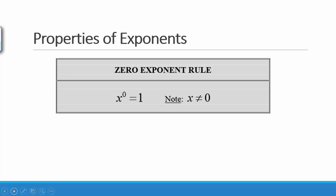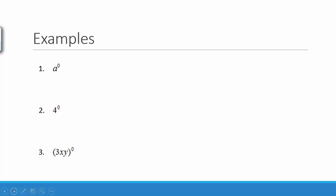Our next property is the zero property of exponents: if you raise any number or variable to the zero power, you get 1. Note, x cannot equal 0. So a to the zero is equal to 1, and 4 to the zero is equal to 1. Notice that 3xy is all in parentheses and the power of 0 is on the outside, so we are raising 3xy to the zero power. Anything raised to the zero power is equal to 1.